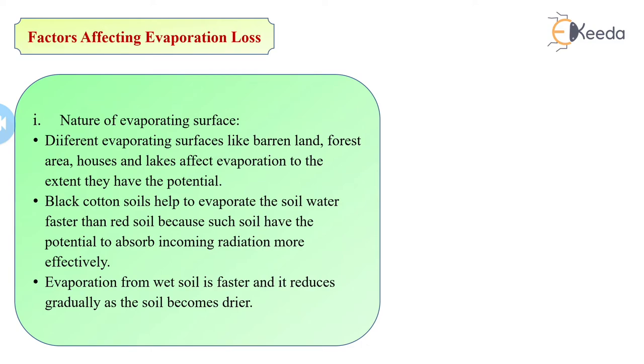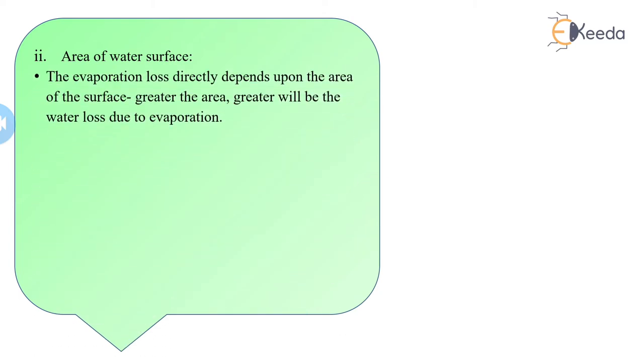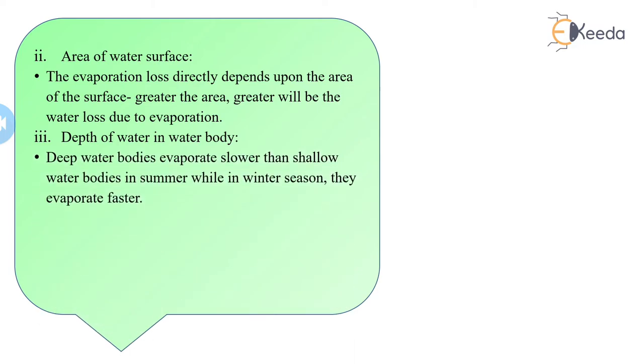We have the area of water surface. Evaporation loss directly depends upon the area of the surface. The greater the area, greater will be the water loss due to evaporation. Third factor is depth of water in a water body. Deep water bodies evaporate lower than shallow water bodies in summer, while in winter season they evaporate faster.